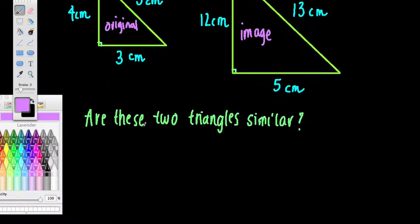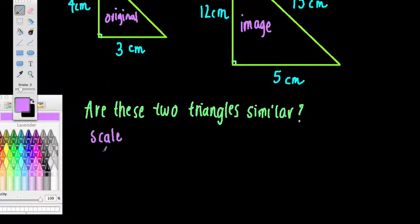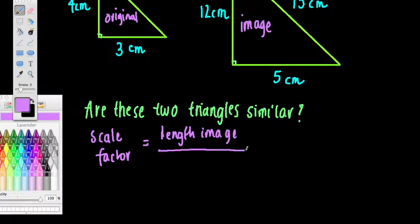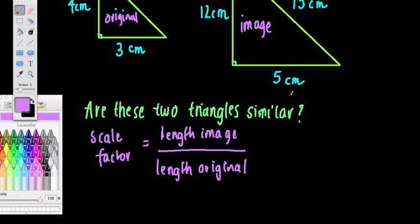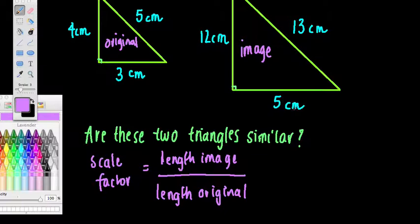So what I can say, sometimes it's easier to do it this way. The scale factor is equal to length in the image over a length in the original. Now what I should get is when I do this ratio: 5 over 3, 12 over 4, 13 over 5.